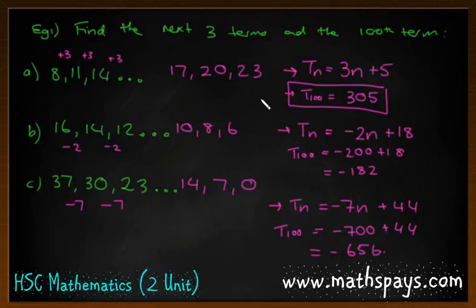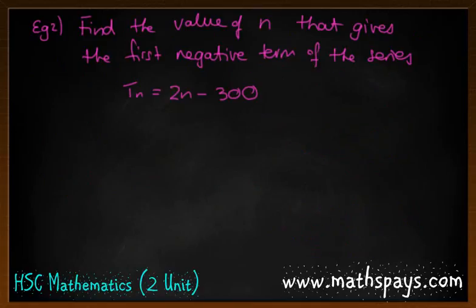That's pretty much it for that part. What about the next question? Find the value of n that gives the first negative term of the series T_n = 2n - 300. Hold on, I'm just going to make that into positive. I realized when writing it down that it said positive, and if I sub in 1 for my first term, we're going to get a negative number off the bat. So the first positive term.